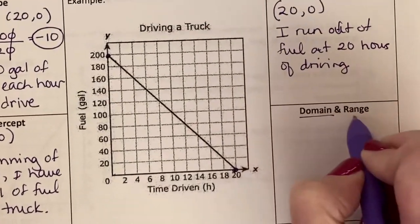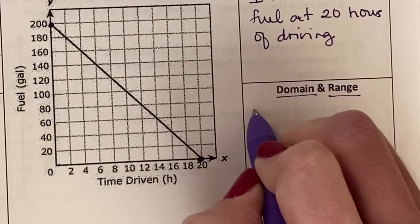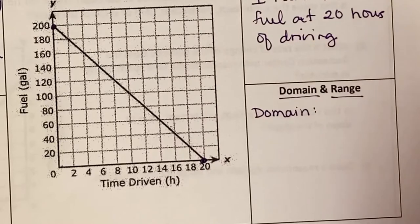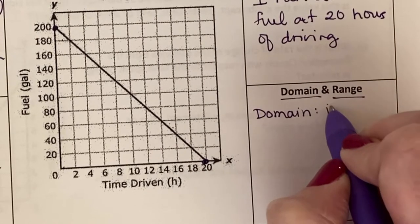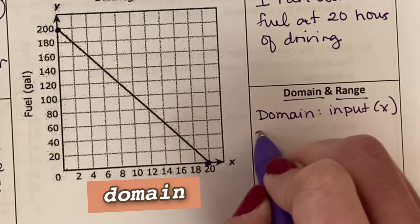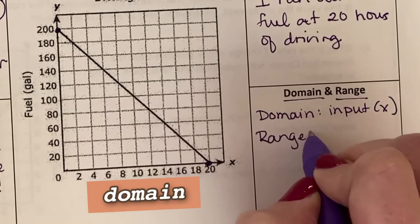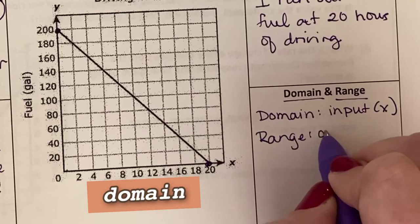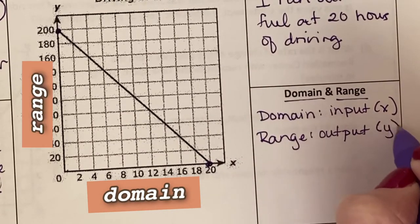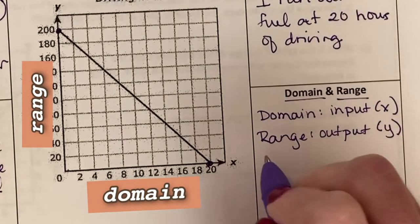Let's talk about domain and range. This is a preview. Domain is a fancy word for talking about all of our inputs or all of our x-values. And range is a fancy term for talking about all of our outputs or all of our y-values.